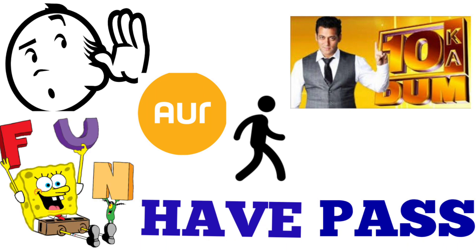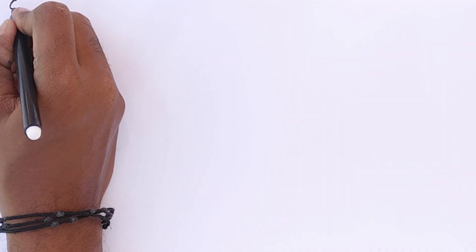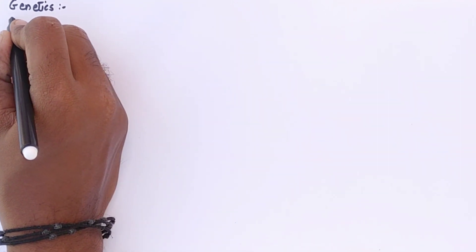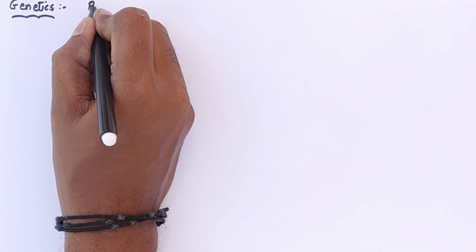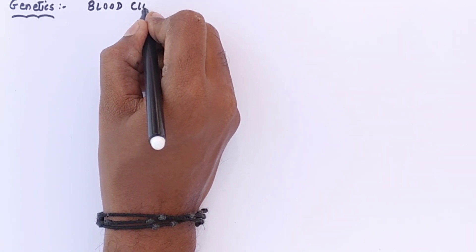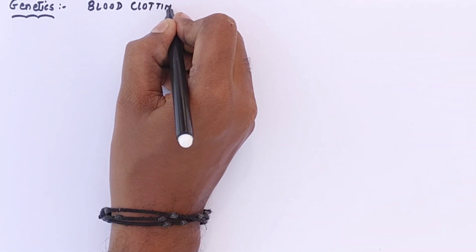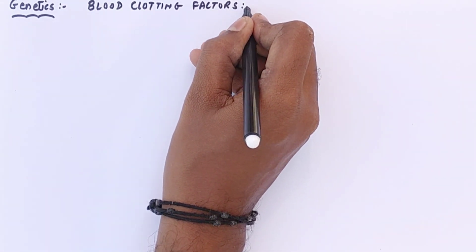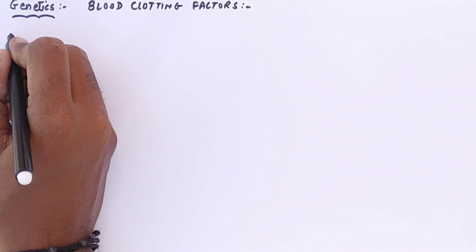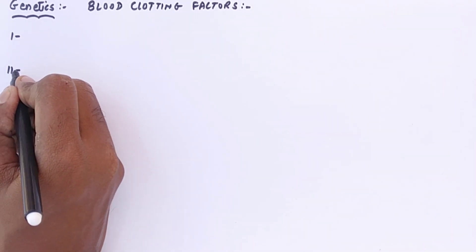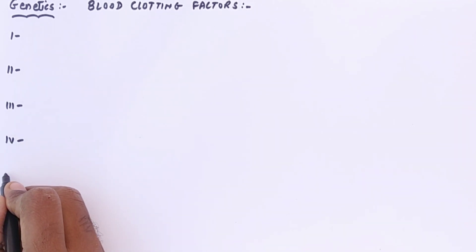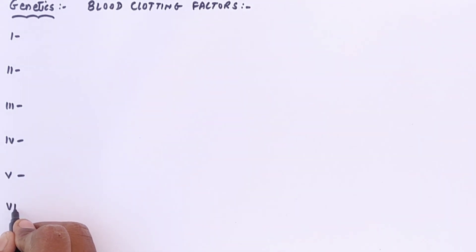Have is blood clotting factor twelve, and Fun is blood clotting factor thirteen. So just remember the full sentence: 'Fir Paro Tunay Calcium Lai Na Suno Aur Chalo Salman Ke Paas Have Fun.' With this one sentence you can remember all the blood clotting factors.